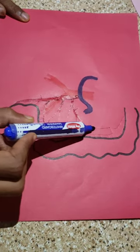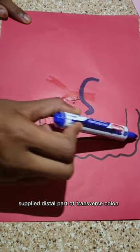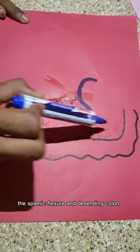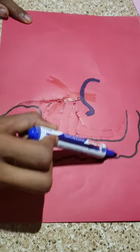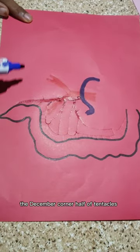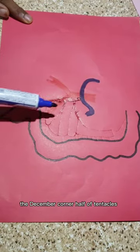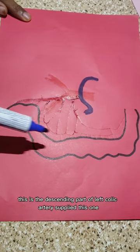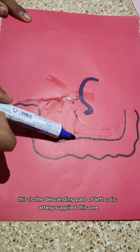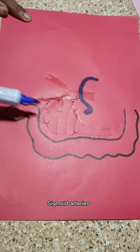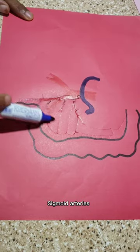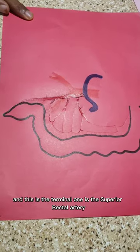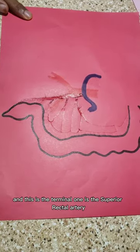The left colic artery has two branches. This is the ascending branch, which supplies the distal part of the transverse colon, the splenic flexure, and the descending colon. This is the descending part of the left colic artery, plus the sigmoid arteries, and the terminal branch is the superior rectal artery.